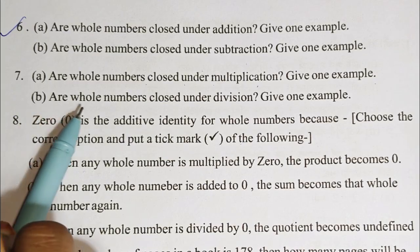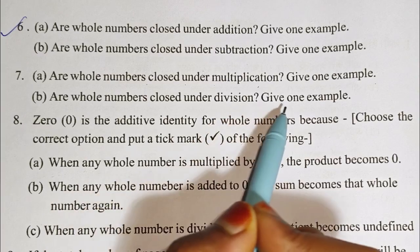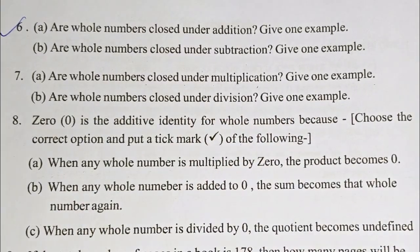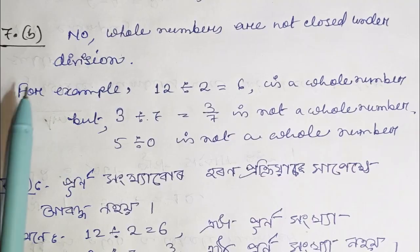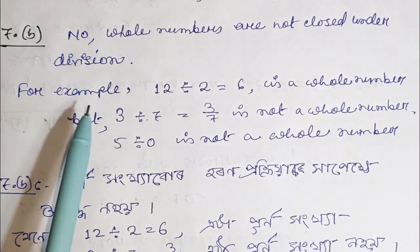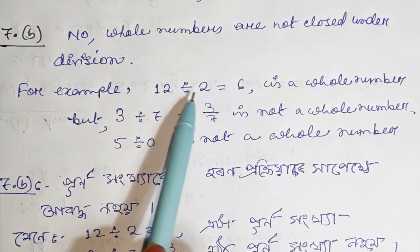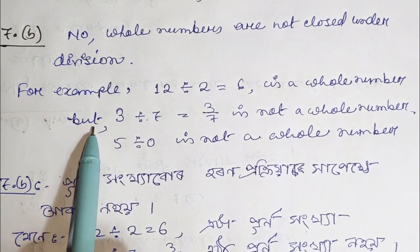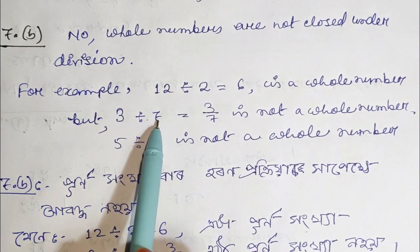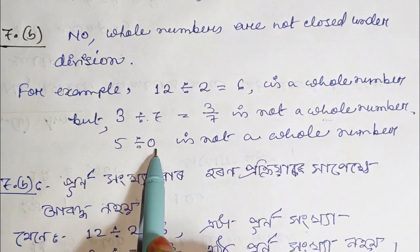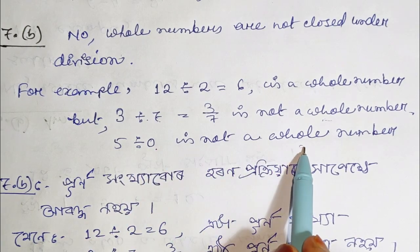Question 7b: Are whole numbers closed under division? Give one example. The answer is no. Whole numbers are not closed under division. For example, 12 divided by 6 equals 6, which is a whole number, but 7 divided by 5 may not give a whole number.